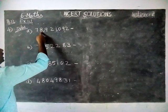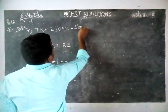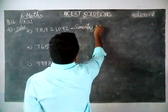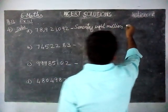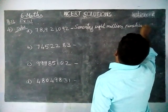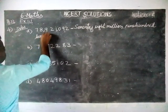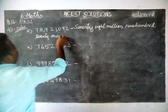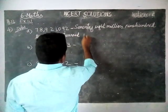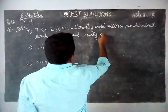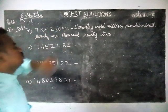So the first number is 78,921,092. Seventy-eight million, nine hundred twenty-one thousand, ninety-two.